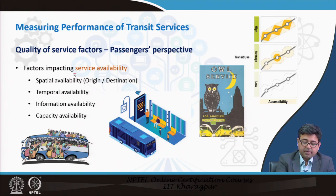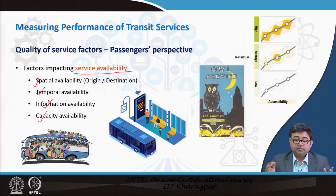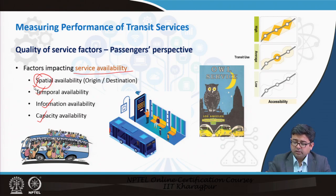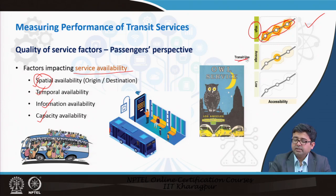Looking at each parameter individually, factors that impact service availability include spatial availability, temporal availability, information availability, and capacity availability. We want the transit system to be available spatially — meaning it should be close to my home or destination. When I reach my destination or disembark from the transit station, my destination should not be very far away. This diagram shows a classic example of how optimally located transit stops create a system that ensures high transit usage, linking accessibility and transit usage.